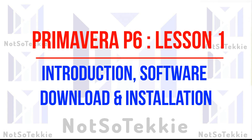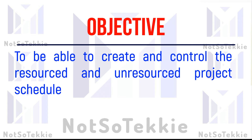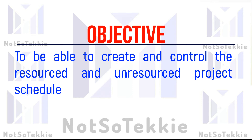Our final topic for today is about Primavera P6, the computer-aided construction and management software. The objective of this tutorial is for us to be able to create, control, and monitor resources in both an unresourced and resourced project schedule — meaning a schedule without resources and with resources. Resources include manpower, material, and equipment.